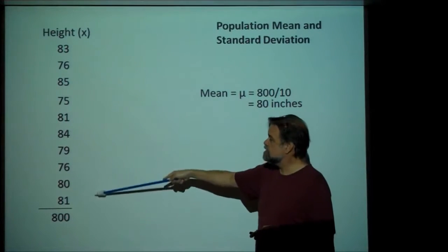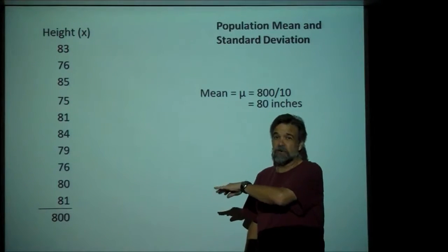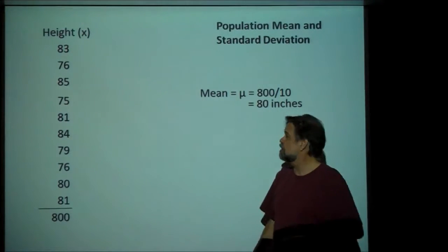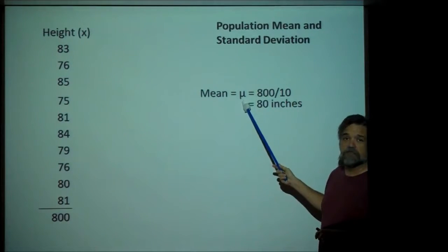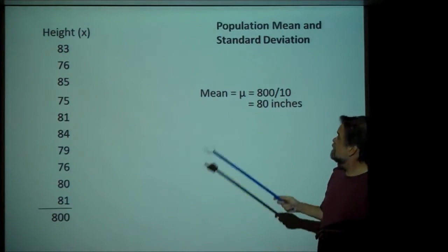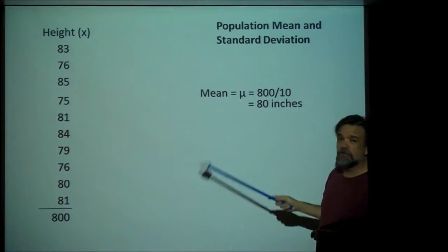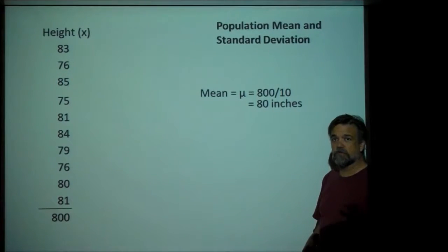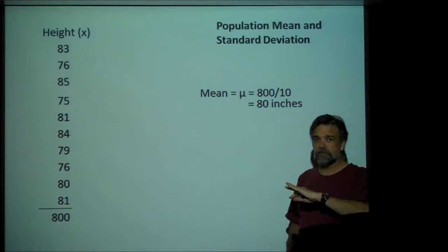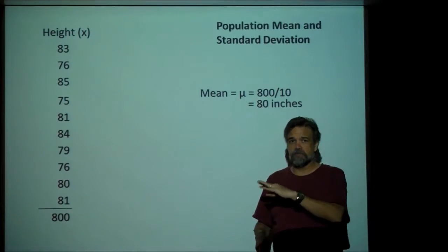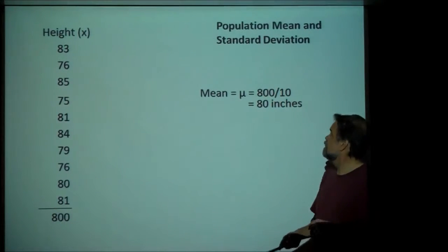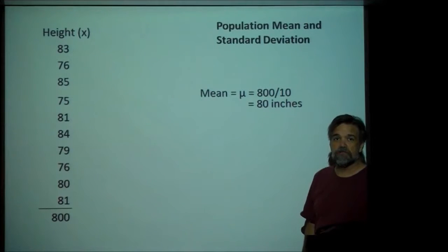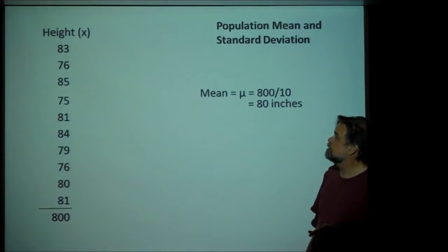So, the mean of these heights is 80 inches. These are basketball players, so they're really tall. This little symbol right here is the Greek letter mu — this is the symbol that we generally use for the population mean. Remember, in an early video, we talked about the difference between population means and sample means.